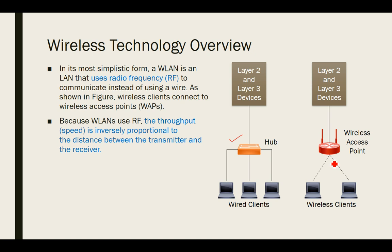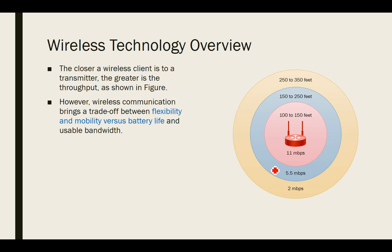Another important point: because wireless LANs use RF, the throughput is inversely proportional to the distance between transmitter and receiver. As shown in the figure, as you increase the distance from the wireless device, the speed of data decreases.